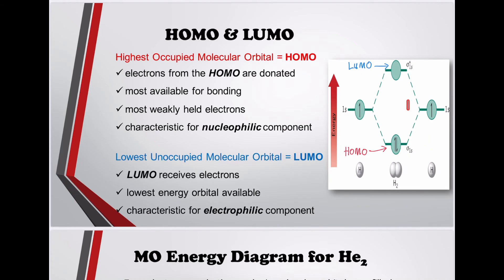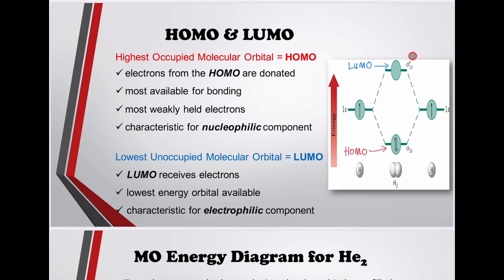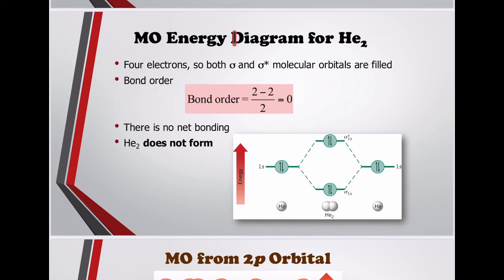Looking at the molecular orbital diagram: the HOMO is the highest occupied molecular orbital. For H₂, the HOMO is the sigma 1s bonding orbital. The LUMO is the lowest unoccupied molecular orbital; for H₂, the LUMO is the sigma anti-bonding 1s orbital.